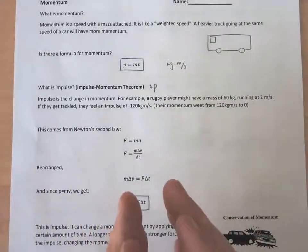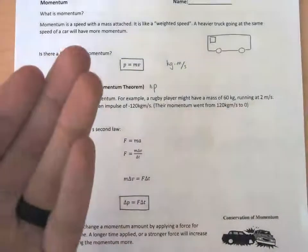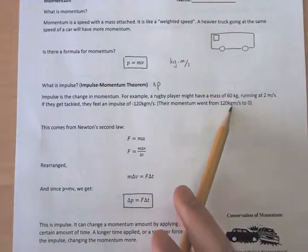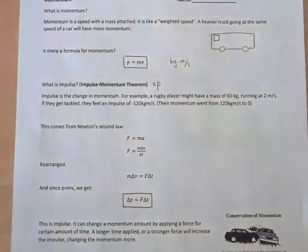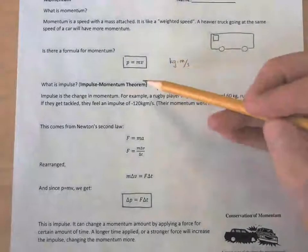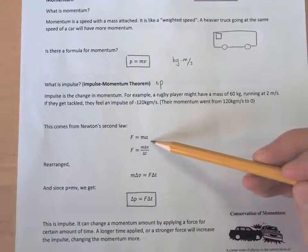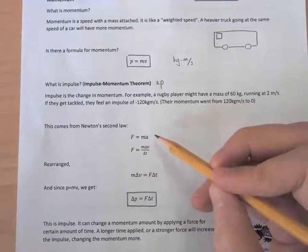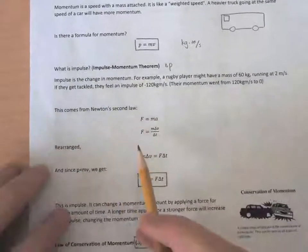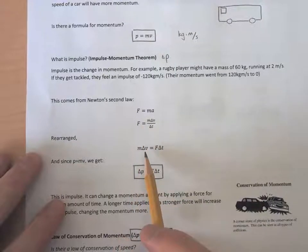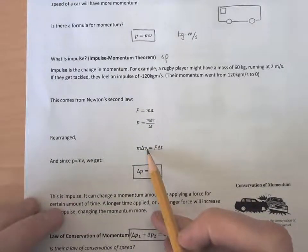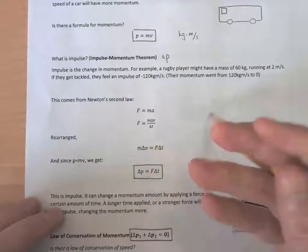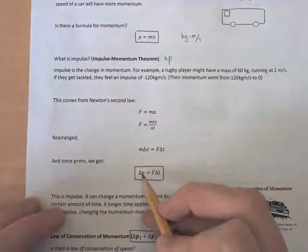This usually happens over a very small amount of time, since they go from running to stopped almost instantly. Their momentum went from 120 kilogram meters per second to zero. This concept comes from Newton's second law, F = ma. If you rearrange it — acceleration is the change in velocity over the change in time — you get F·Δt = m·Δv, and since mv is momentum, this equals the change in p, or impulse.